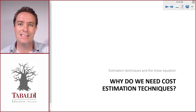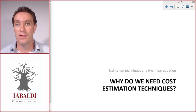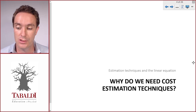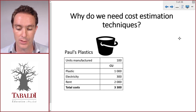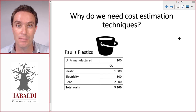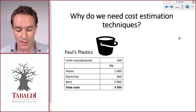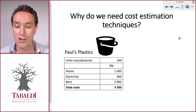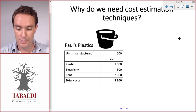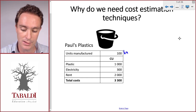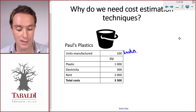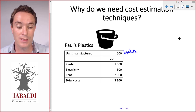Let's take a quick look at the problem we face when estimating future costs. I'm going to use an example of Paul's Plastics. Paul manufactures plastic buckets and he's made a list of his costs for the past month in which he produced 100 buckets.